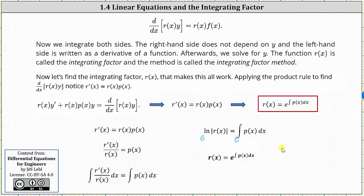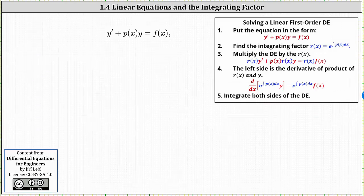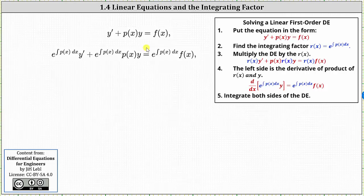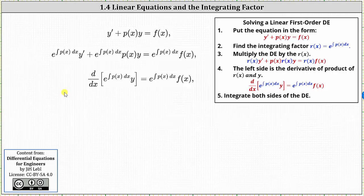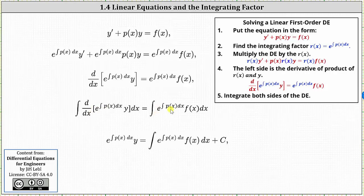Now let's go through the entire process starting with the first-order linear differential equation in standard form. Once we have the equation in this form, we multiply both sides by the integrating factor, which is e to the power of the integral of p of x dx. We know the left side equals the derivative of r of x times y, where r of x is the integrating factor. The next step is to integrate both sides with respect to x. On the left, the integral undoes the derivative, leaving us with the integrating factor times y. On the right, when we integrate we have a constant of integration, so we have plus c.